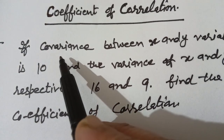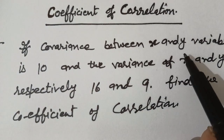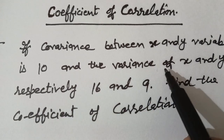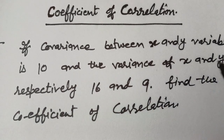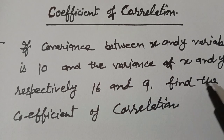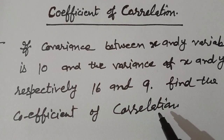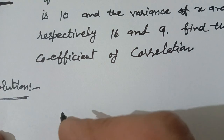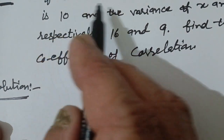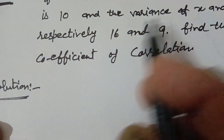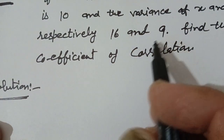If the covariance between x and y variables is 10, and the variance of x and y are respectively 16 and 9, find the coefficient of correlation. So, we are given: covariance of x and y is 10, and variance of x and y are 16 and 9.